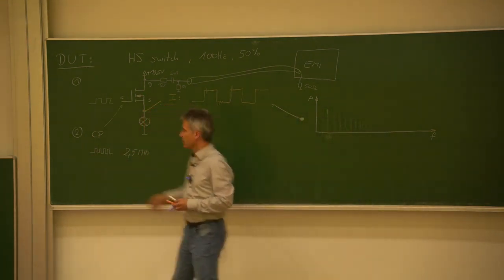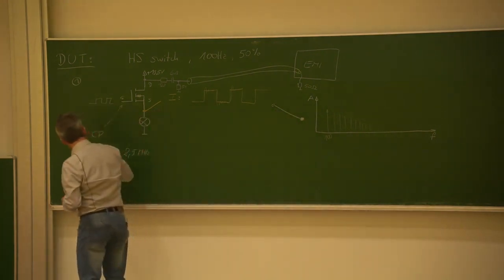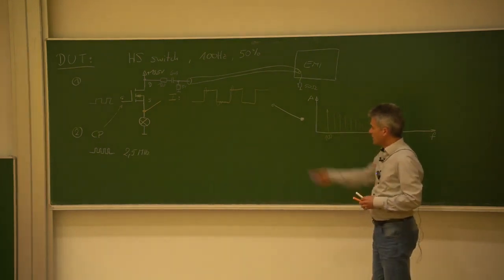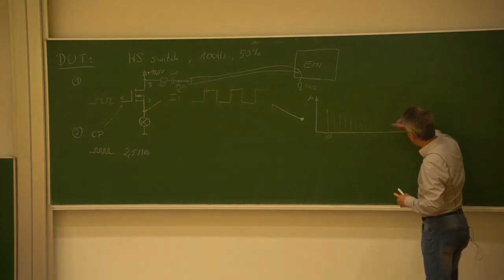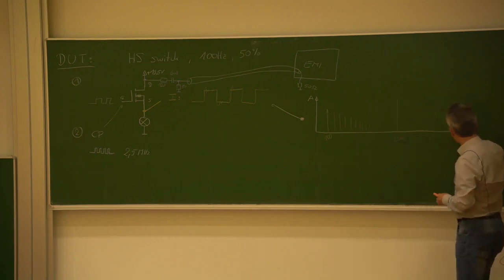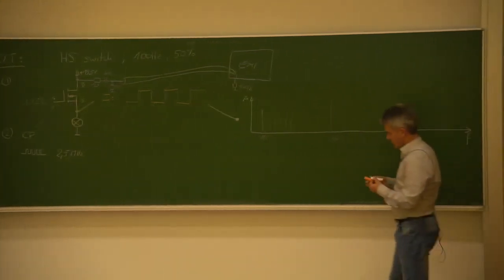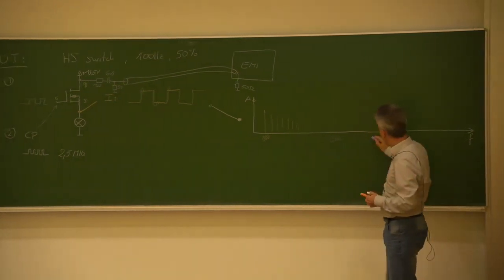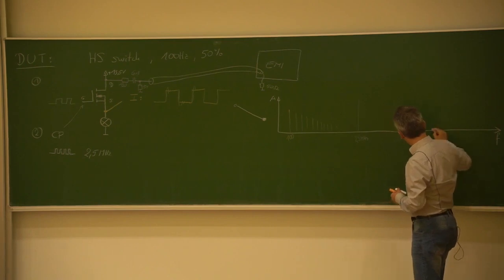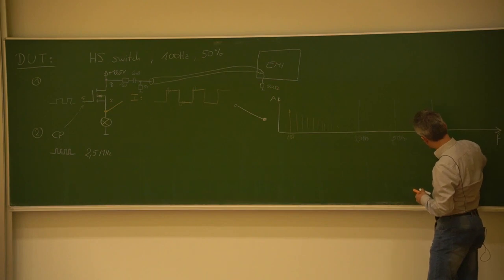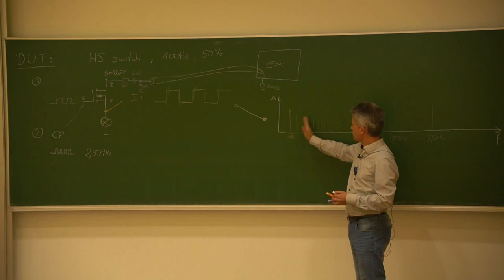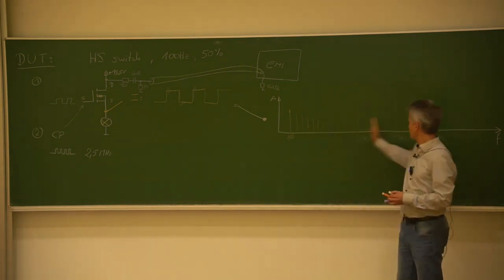The same applies for the charge pump signal — let's make this purple. This starts at 2.5 MHz, so the first component will be somewhere around 2.5 MHz, the next peak at 5 MHz, then at 7.5 MHz, and so on up to the very high frequency range. So we have a combination of switching activity separated by 100 Hz and switching activity separated by 2.5 MHz, and the EMI receiver sees everything more or less at the same time, depending on which frequency position we are currently measuring.